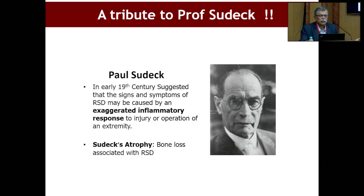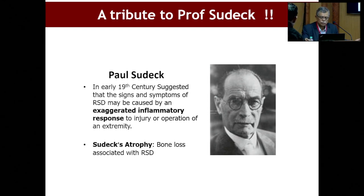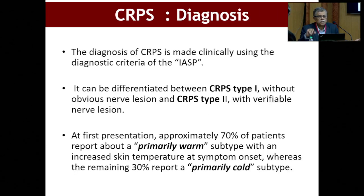Paul Sudek — we used to call this Sudek's dystrophy. When I joined my training, we used to call it Sudek's dystrophy. Sudek was the one who in the 19th century defined the signs and symptoms of reflex sympathetic dystrophy. He called it RSD or Sudek's dystrophy, where there was an exaggerated inflammatory response along with osteopenia, osteoporosis, and associated signs of dystrophic changes. The term CRPS came when the International Association for the Study of Pain found there were two types: CRPS type 1 with no nerve injury, and CRPS type 2 where there is a nerve injury.